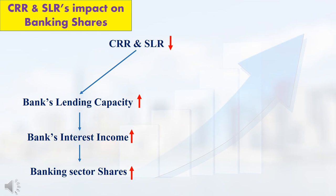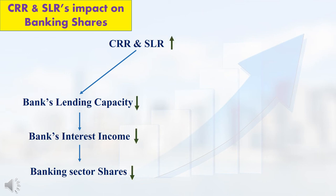If RBI reduces the CRR and SLR, what will be the impact on the share market: if CRR and SLR are reduced, the bank will have more amount for giving loans. If the bank is giving more loans, then the bank will get more interest income, so banking sector shares will have nice growth. Suppose RBI increases CRR and SLR — by that time bank liquidity will reduce, that is the bank will have less amount for giving loans. If the bank gives less loans, the bank will get less interest income, so banking sector shares will drop.